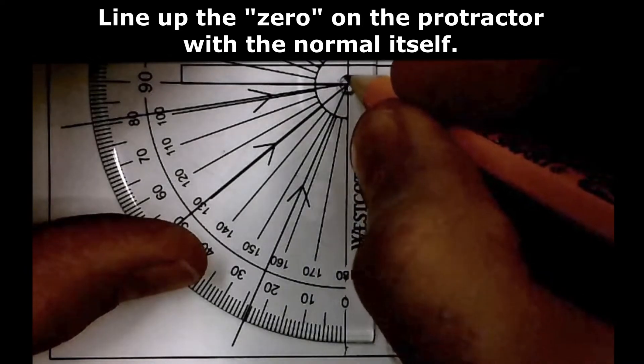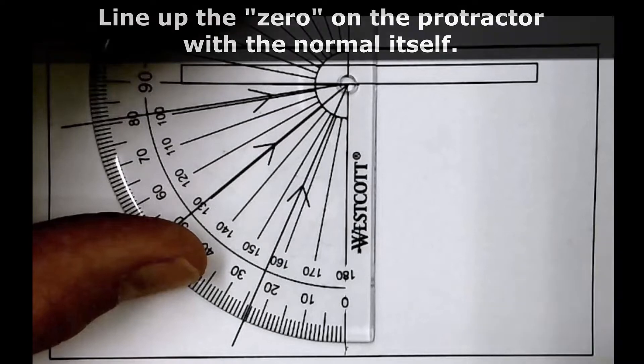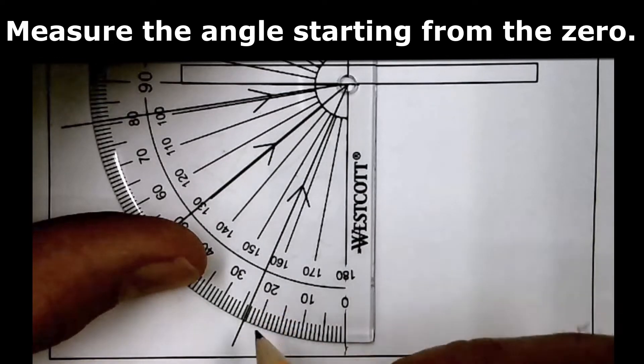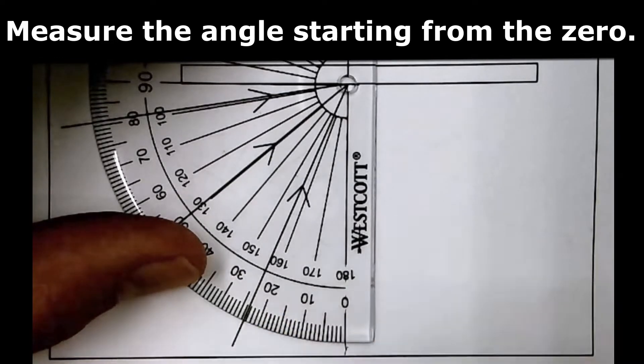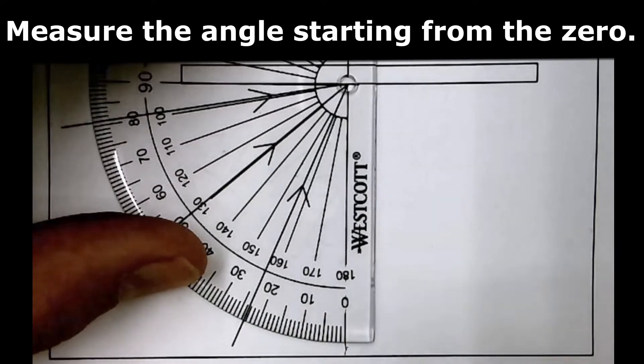And we can see it centered on the point where the ray contacts the surface. Now starting from the zero, we can measure the angle of incidence, which looks like it is 23. We can even get in between those, so 23.5 degrees.